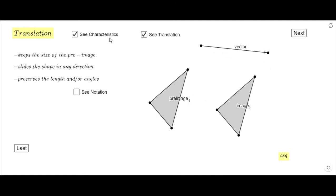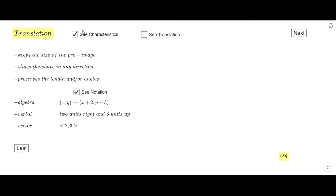Let's see a couple things about translation. It keeps the size as you notice, slides the shape in any direction, and preserves the measure of the sides and the angles. You can see a couple ways of notation: an algebraic way where you use algebraic relation, a verbal way, and a vector way. Sometimes you may see that.